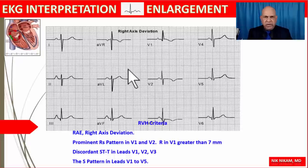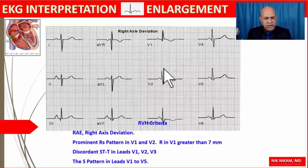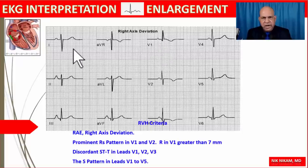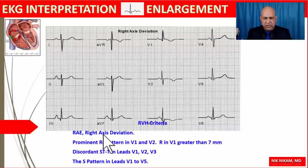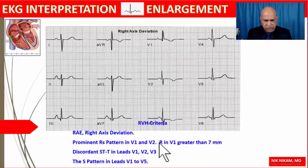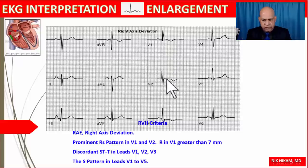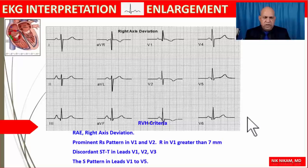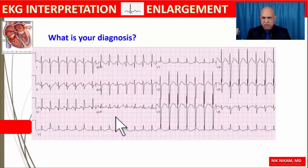Looking again at this tracing: right axis deviation, right atrial enlargement, and tall R waves in the anterior leads. The features indicating right ventricular hypertrophy include right atrial enlargement, right axis deviation, an R:S pattern in V1 and V2, R in V1 greater than seven millimeters, and discordant STT changes. We may also see deep S waves in the lateral chest leads on other tracings.